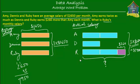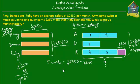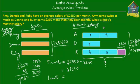So the total salary of Amy, Dennis, and Ruby is $7,950. Now let's find out what each blue unit is equal to. There are 1, 2, 3, 4, and 5 blue units. So 5 units are equal to $7,950 minus $260, which equals $7,690. So 1 unit is equal to $7,690 divided by 5.